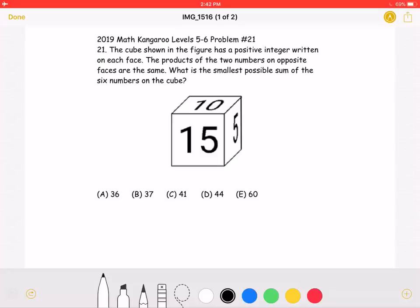This is the 2019 Math Kangaroo Levels 5-6, problem number 21. The cube shown in the figure has a positive integer written on each face. The products of the two numbers on opposite faces are the same. What is the smallest possible sum of the six numbers on the cube?